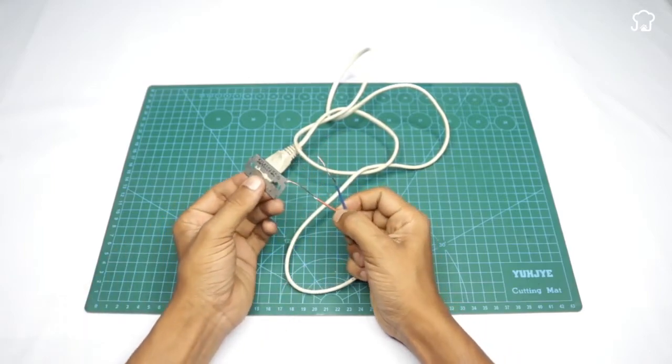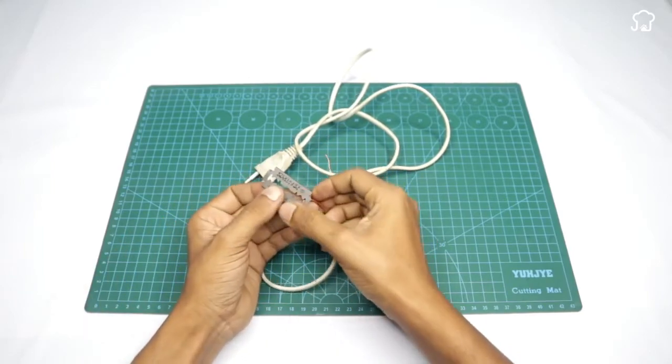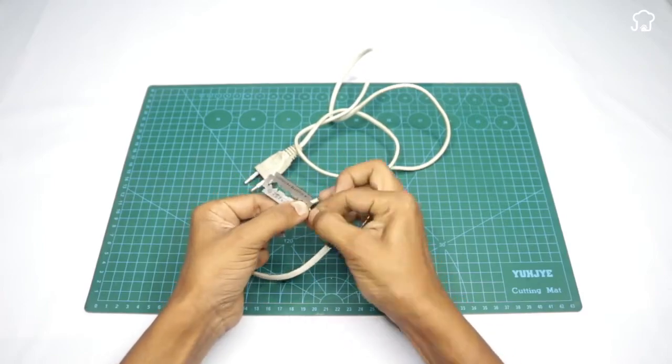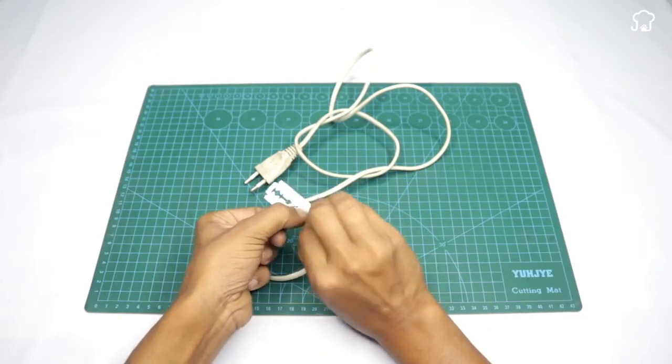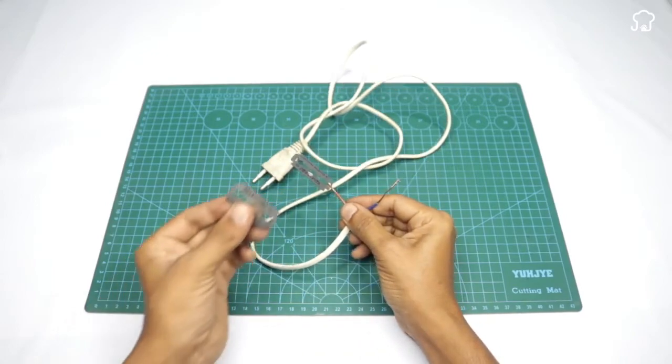Here comes the fun part. Take one of the blades and tie one of the wire ends around it, ensuring it's securely fastened. Repeat this step with the other blade.